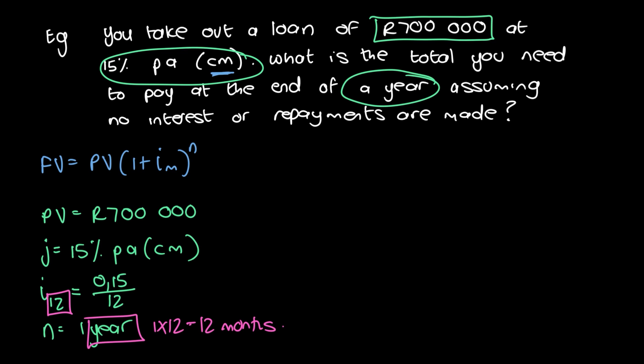All right, so now we have all the information. Let's just see that it ticks off all the boxes in the formula. So we have the present value, we have the i_12, and we have the n. So now we can just go ahead and put it in the formula and solve. So we have the future value equals 700,000 times 1 plus 0.15 divided by 12, bracket to the power of 12.